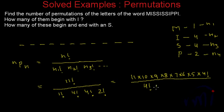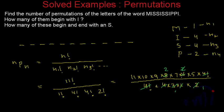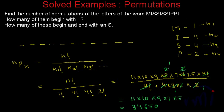We have 4 factorial times 4 factorial in the denominator. Expanding: 11 factorial becomes 11 × 10 × 9 × 8 × 7 × 6 × 5 × 4 factorial. The 4 factorial in the numerator cancels one 4 factorial in the denominator. The remaining 4 factorial expands to 4 × 3 × 2, and 2 factorial is 2. After all cancellations, we get 11 × 10 × 9 × 7 × 5, which equals 34,650. So you can make 34,650 words using these letters.